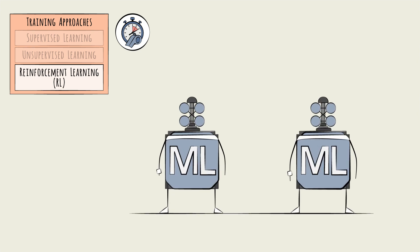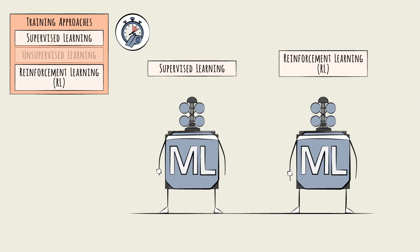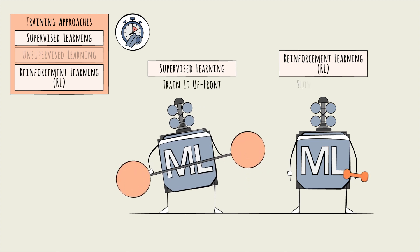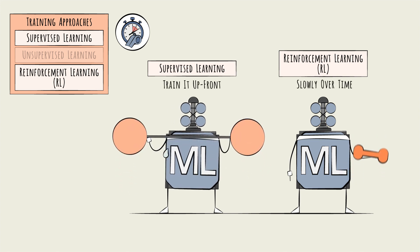On the surface, the difference between RL and supervised learning, in this case, appears to be a matter of timing: train it up front or slowly over time. However, underneath the hood, very different algorithms would be used for RL versus supervised learning.